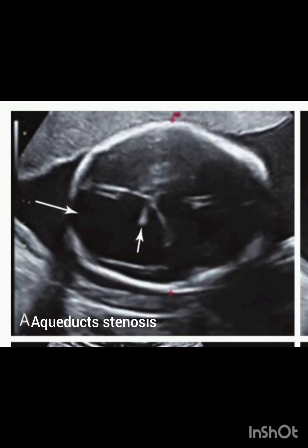In the next few images I'll be talking about aqueductal stenosis. Aqueductal stenosis is an obstruction of the aqueduct of Sylvius — the narrow channel connecting the third and fourth ventricles. It is a common cause of hydrocephalus and is characterized by dilatation of the lateral and third ventricles without a dilated fourth ventricle.